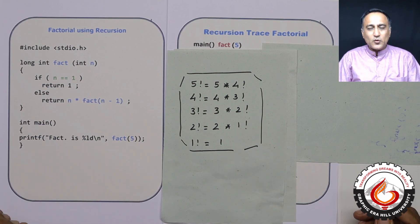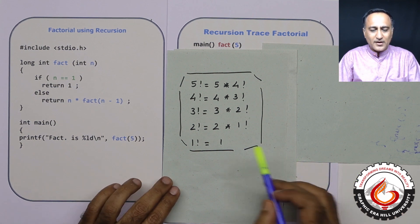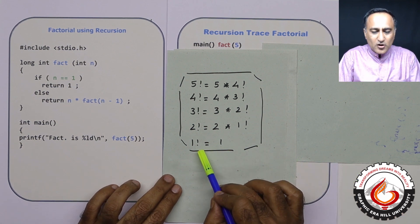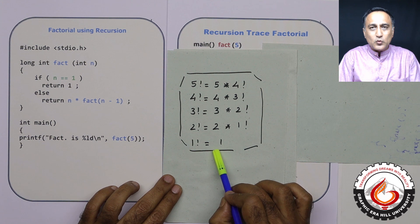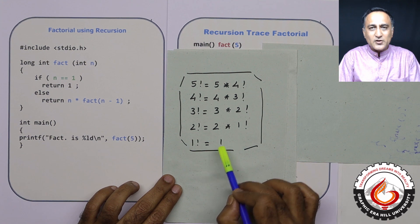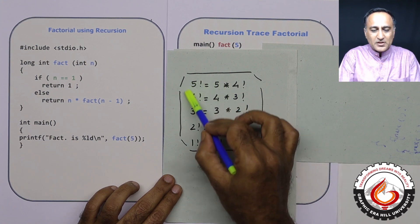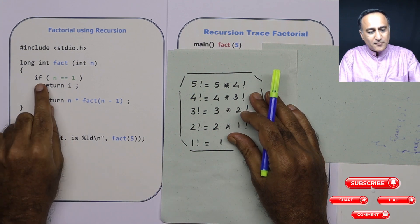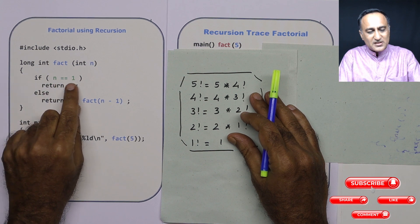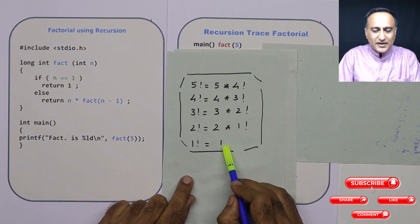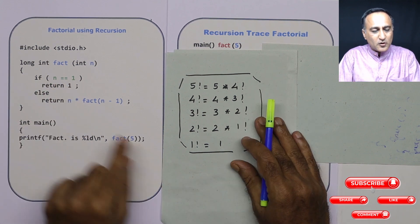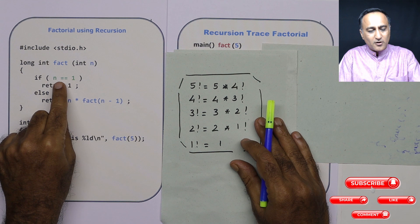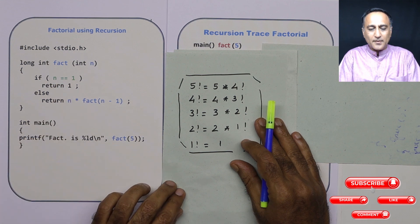The first thing I need to ask is: how long should I continue to find the factorial? As long as the number is not equal to 1, I should keep doing this process. So the first if condition says: if number is equal to 1, simply return 1, because factorial of 1 happens to be 1.